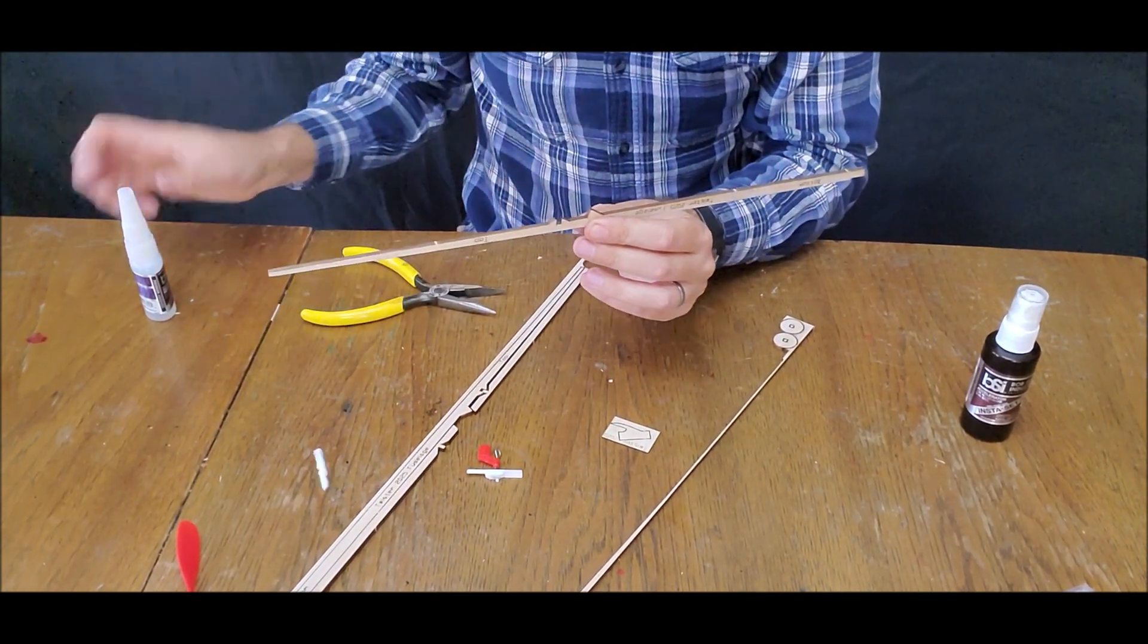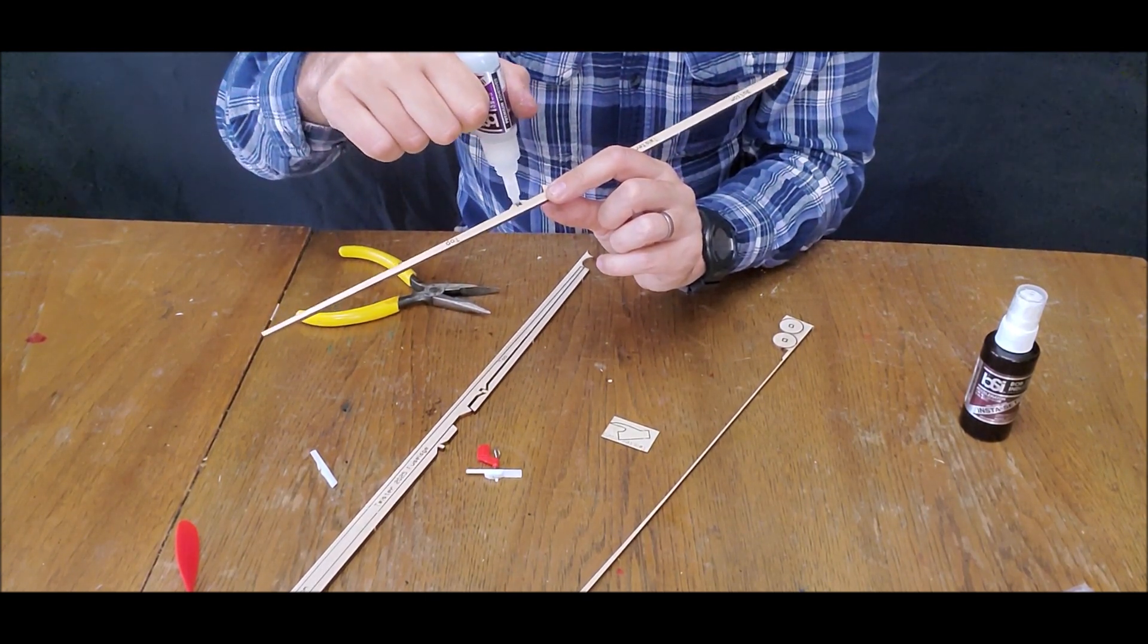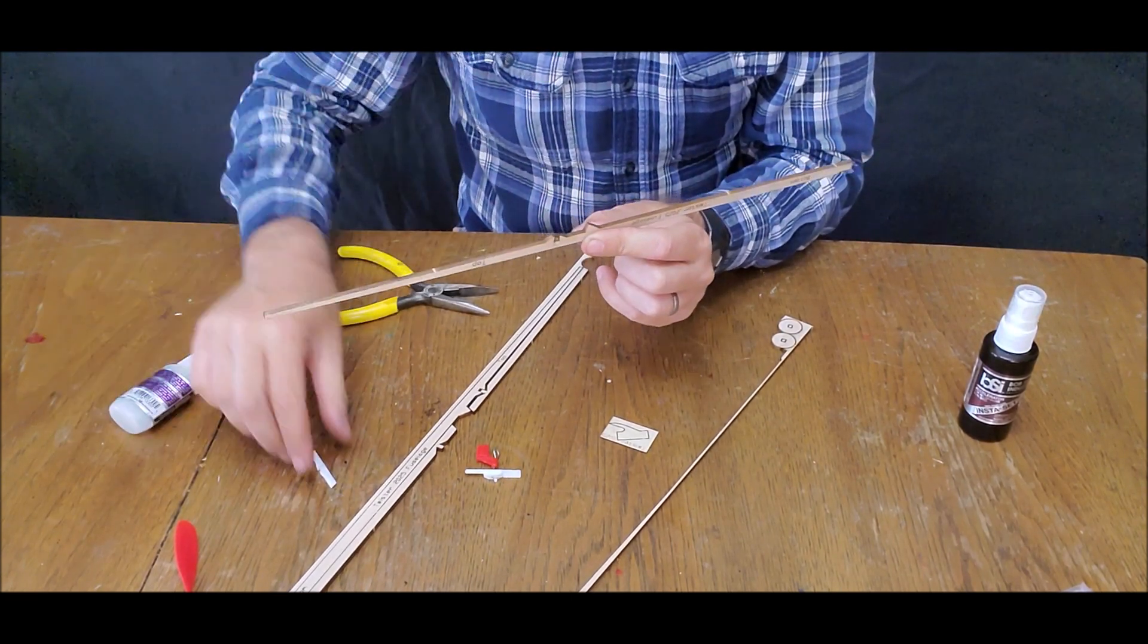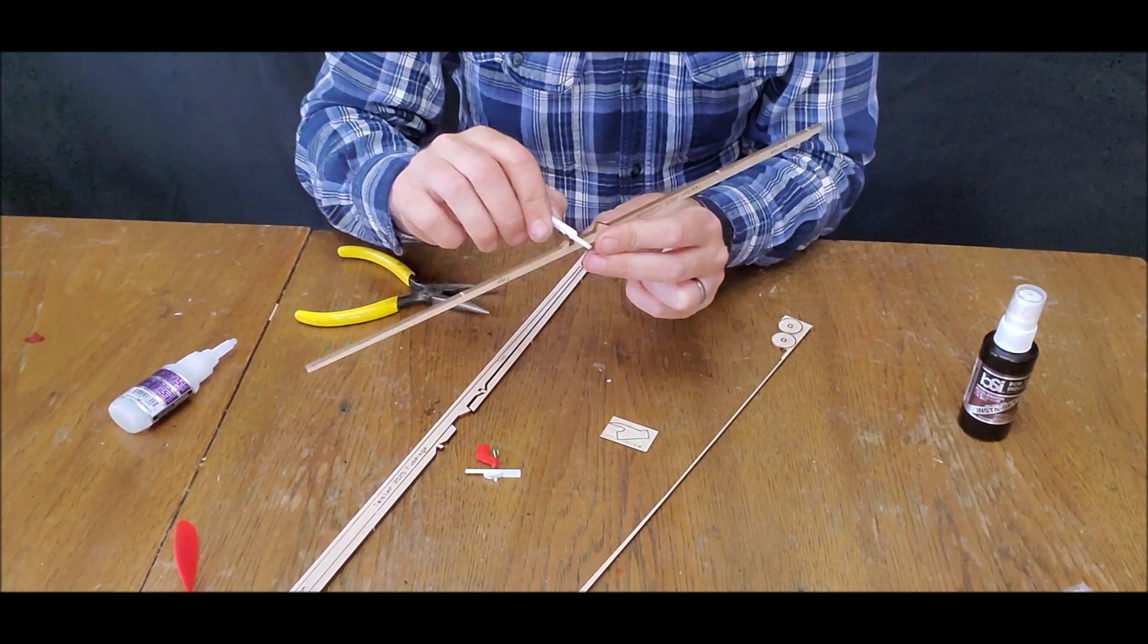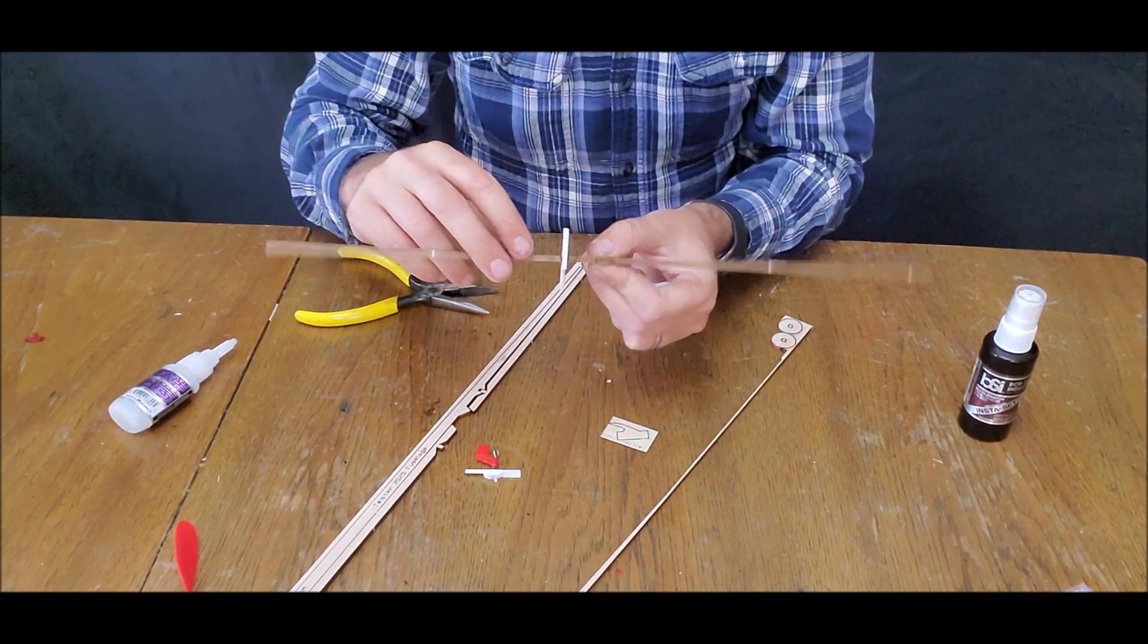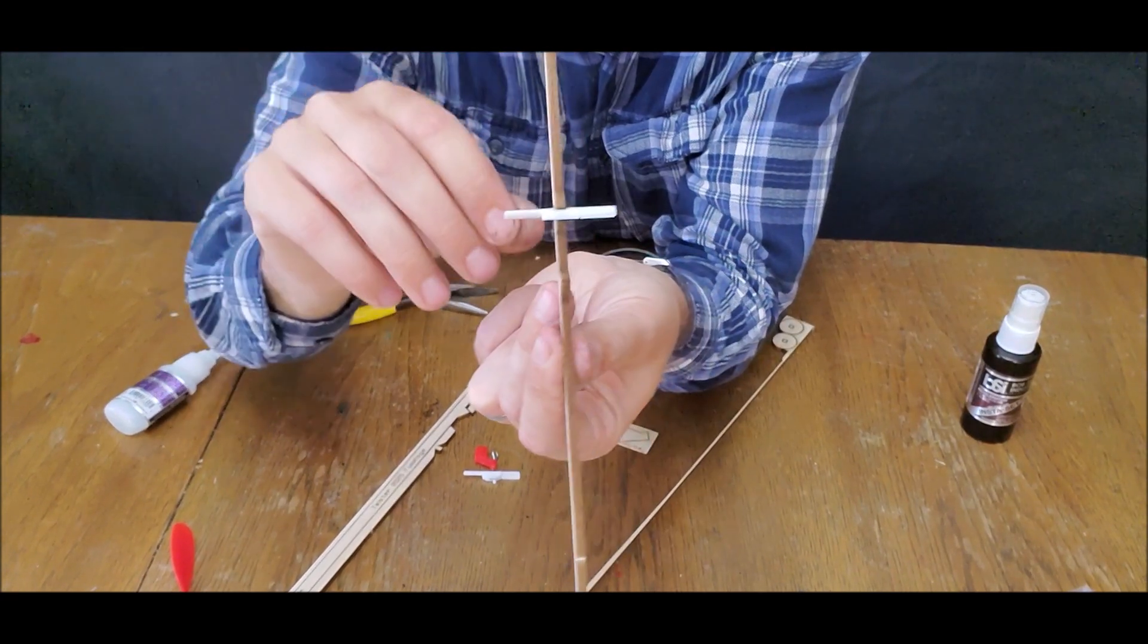So we're going to take this back out. We're going to put glue in this little slot. And then we can drop this guy right down in there. Get it in as square as you possibly can in this dimension and in this dimension.